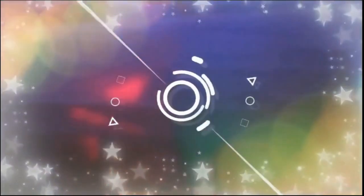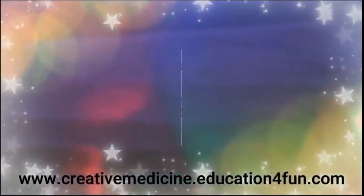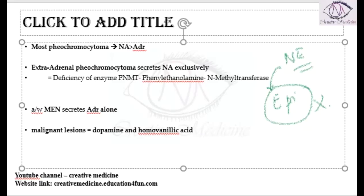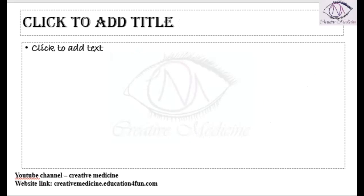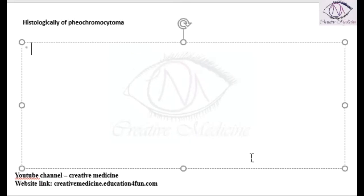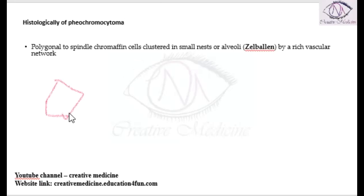Hello friends, welcome to Creative Medicine. In this lecture we will learn about the histology of pheochromocytoma. Pheochromocytoma mainly consists of polygonal cells — actually, pheochromocytoma will produce polygonal cells.